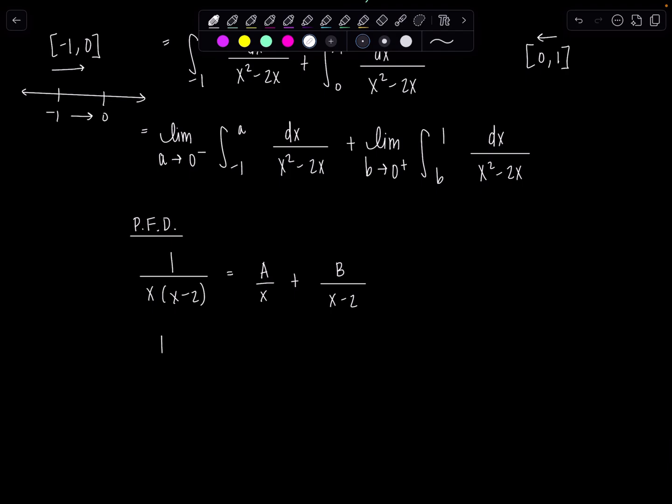Multiply it through by the LCD, which is x times x minus two. So I have one equals a times x minus two plus b times x.